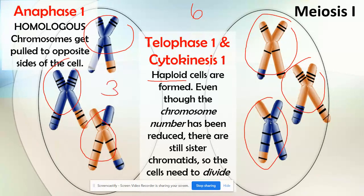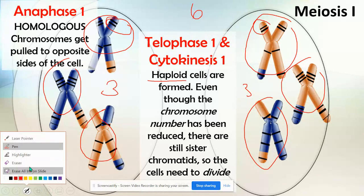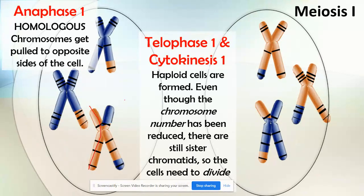These cells are both haploid — we technically have haploid cells with one of each kind of chromosome. So why do we need to divide again, why do we need meiosis II? Because these chromosomes are still duplicated — they still have twice as much DNA. Even though they're haploid with only three chromosomes in each cell, they still have their sister chromatids attached. So we need to go through a second round of division.